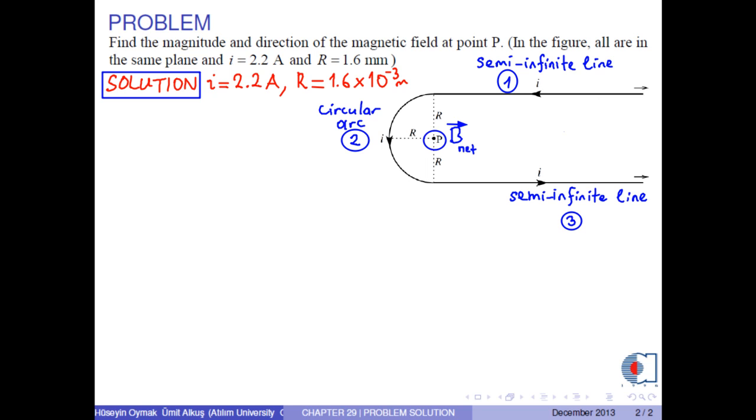The net magnetic field at point P is then B1 plus B2 plus B3.